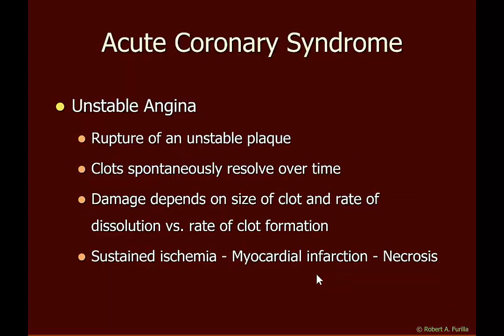Let's talk about acute coronary syndrome, which is also referred to as unstable angina. A rupture of an unstable plaque causes a thrombus to form. These clots resolve over time, but the damage depends on the size of the clot created and the rate at which it dissolves. If clots are forming rapidly and dissolving slowly, or if the clot is large, sustained ischemia results — a myocardial infarction or heart attack — leading to necrosis as cells downstream of the obstruction die.